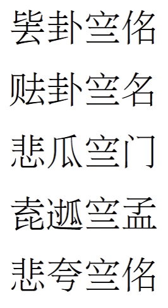Sawndip is a Zhuang word. The Zhuang word for Chinese characters used in the Chinese language is Sawgun, meaning 'characters of the Han.' Gun is the Zhuang term for the Han Chinese. Even now, in traditional and less formal domains, Sawndip is more often used than alphabetical scripts.